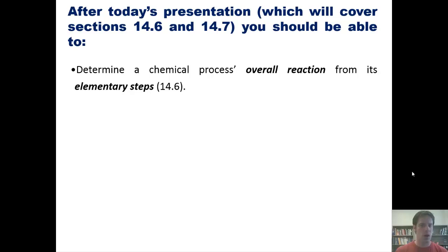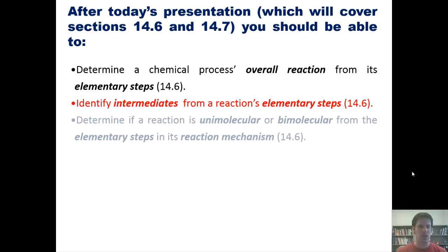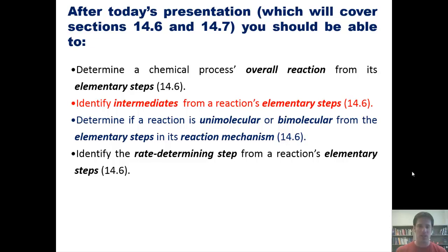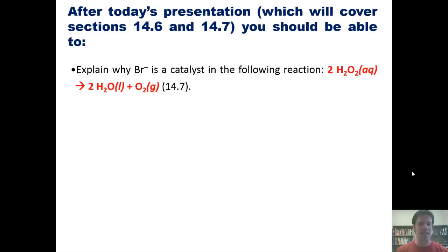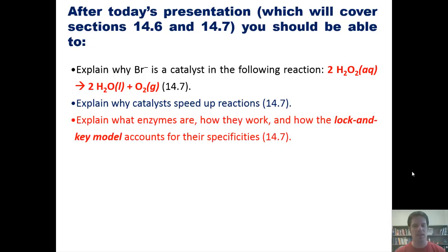First, determine a chemical process's overall reaction from its elementary steps. Second, identify intermediates from a reaction's elementary steps. Third, determine if a reaction is unimolecular or bimolecular from the elementary steps in its reaction mechanism. Fourth, identify the rate-determining step from a reaction's elementary steps. Fifth, predict rate laws for simple unimolecular reactions. Sixth, explain the difference between a homogeneous catalyst and a heterogeneous catalyst. Seventh, explain why bromide is a catalyst in the following reaction. Eighth, explain why catalysts speed up reactions. And ninth, explain what enzymes are, how they work, and how the lock and key model accounts for their specificities. We will cover all these in this and two subsequent videos. It's a long list, so let's get started.